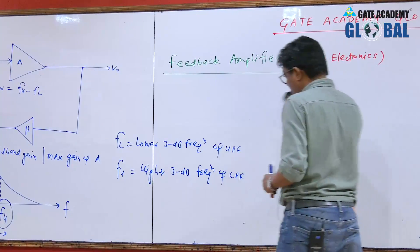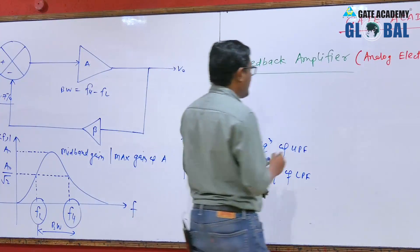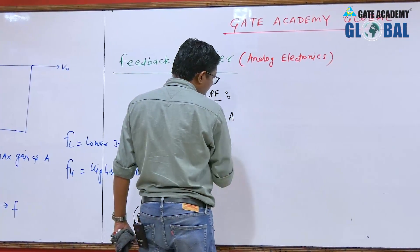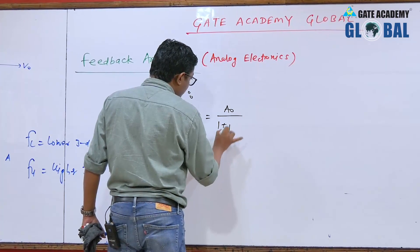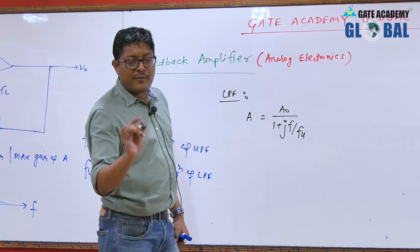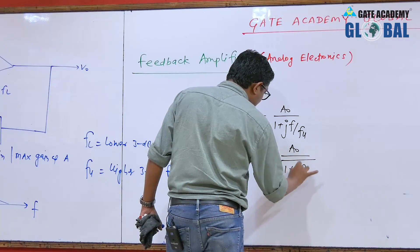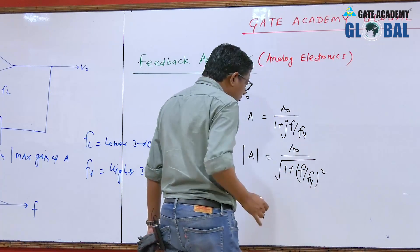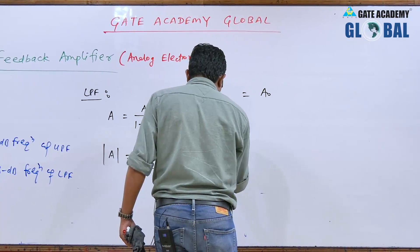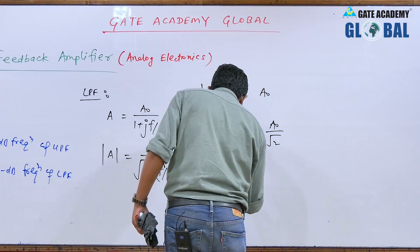First I will cover the basic frequency response of a low pass filter. The frequency response of a low pass filter is given by A0 upon (1 plus j·f upon FH), where A0 is the mid-band gain. The magnitude of A is given by A0 upon under root (1 plus (f/FH) squared). The value of A at f=0 is A0, at f=FH is A0 by root 2, and at f=infinite is 0.